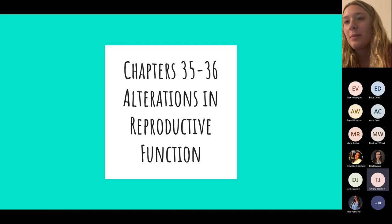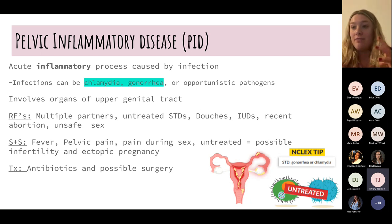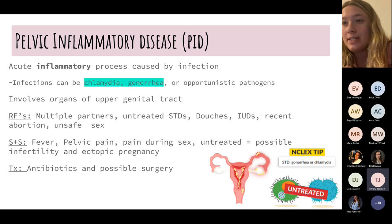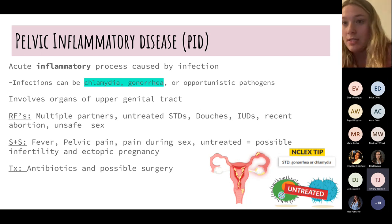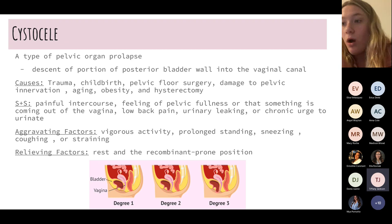PID — pelvic inflammatory disease — is usually preceded by a chlamydia or gonorrhea infection that travels up the urinary tract into the pelvis. Patients usually have fever and pain during sex. It's critical to educate patients to seek treatment, because untreated PID can lead to infertility and ectopic pregnancy as scar tissue builds up. It's usually treated well with antibiotics, but advanced cases may require surgery or hysterectomy.